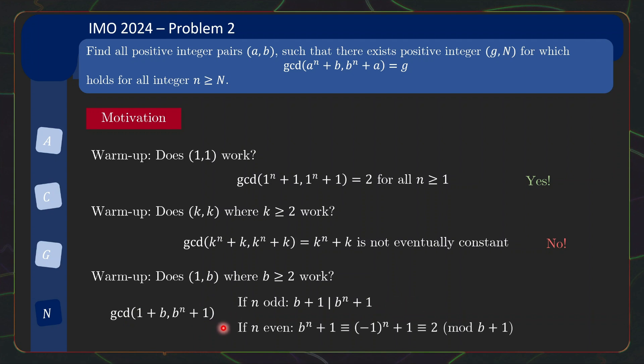If n is even, we can show that b + 1 does not divide b^n + 1. This is quite simple because if you look at mod b + 1, b ≡ -1. So this thing is congruent to 2 mod b + 1 and b + 1 is at least 3 so this thing is not 0.